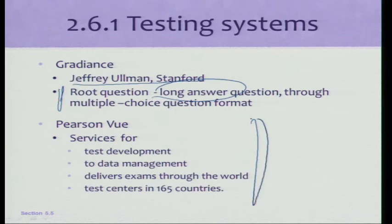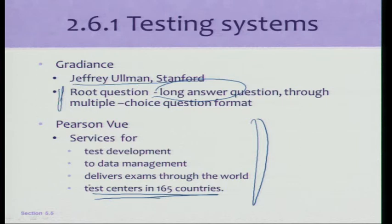Pearson VUE has a different approach — they actually have test centers in 165 countries, physical centers where students go, sit down, and take the exam. This handles the identity management problem, making sure there is no masquerading while taking the test.